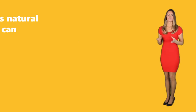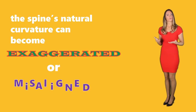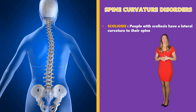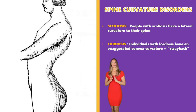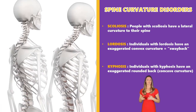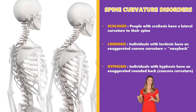Spine curvature disorders: in some cases, the spine's natural curvature becomes exaggerated or misaligned, forming curvature abnormalities. Scoliosis — people who have scoliosis have a lateral curvature to their spine. Lordosis — individuals with lordosis have an exaggerated convex curvature of their spine; essentially the spine curves inward at the lower back, a condition also termed sway back. Kyphosis — individuals with kyphosis have an exaggerated rounded back, or concave curvature.